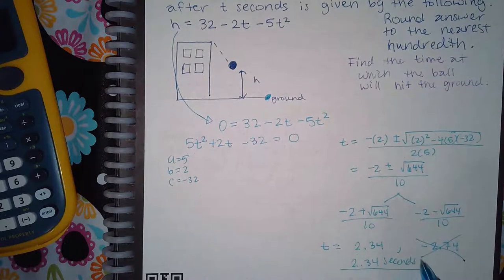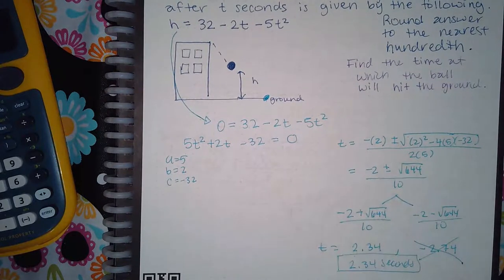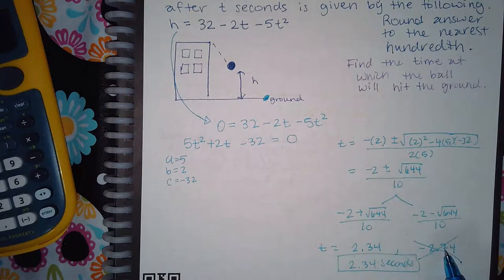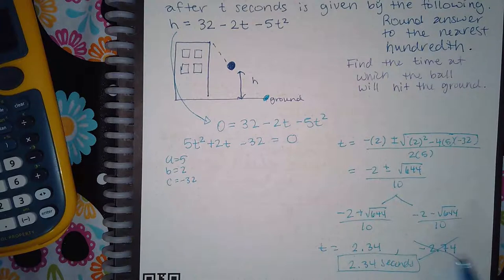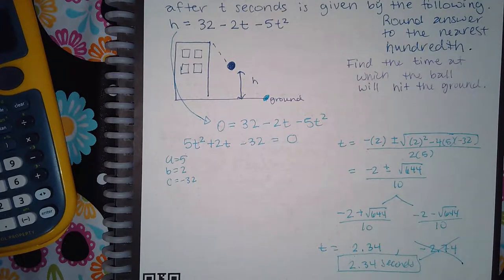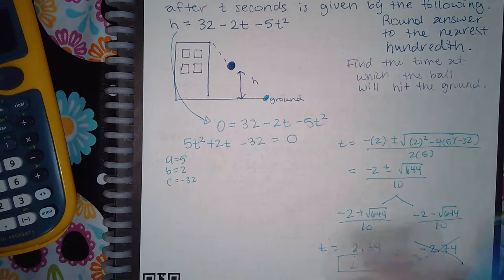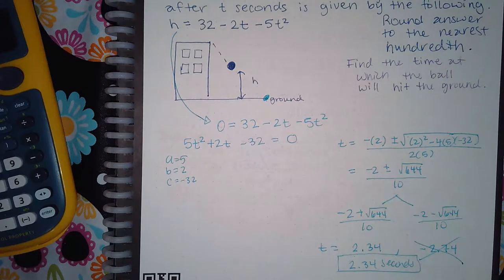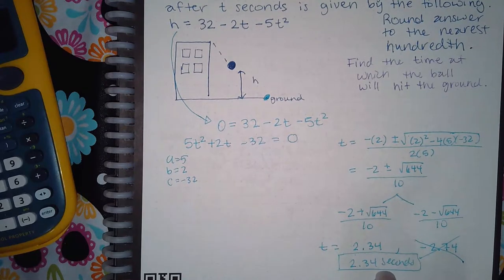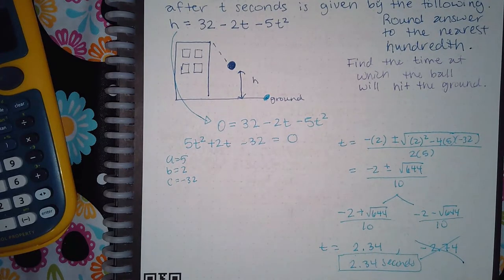You always have to verify that the responses that you get make sense. Negative time does not make sense when we're doing these problems with respect to time. If you were doing geometry, you couldn't get a negative length or a negative width. Those don't make sense in the context of the problem. So that is going to be our solution: 2.34 seconds.